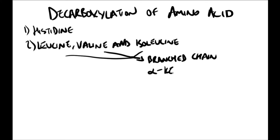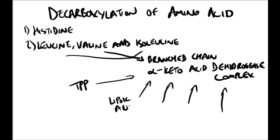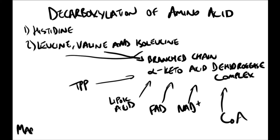This complex uses thiamine pyrophosphate, lipoic acid, FAD, NAD+, and coenzyme A as its coenzymes. An inherited deficiency of branched chain alpha-keto acid dehydrogenase results in accumulation of the branched chain alpha-keto acid substrates in the urine. Their sweet odor prompted the name maple syrup urine disease, which has neurological manifestations.